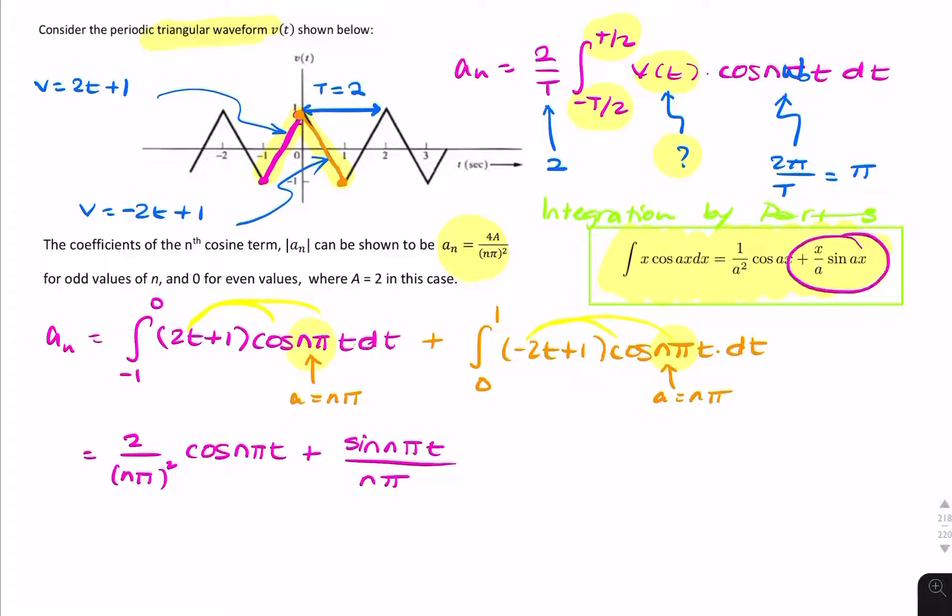We still need this bit here. So it's plus x over a, so that would be plus 2t over n pi sine n pi t. All of that is from minus 1 to 0, plus the same again.